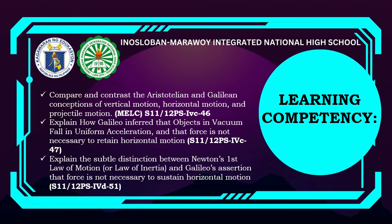For the learning competency: compare and contrast the Aristotelian and Galilean conceptions of vertical motion, horizontal motion, and projectile motion; explain how Galileo inferred that objects in vacuum fall with uniform acceleration and that force is not necessary to retain horizontal motion; and explain the distinction between Newton's first law of motion or law of inertia and Galileo's assertion that force is not necessary to sustain horizontal motion.